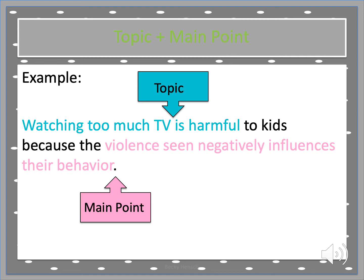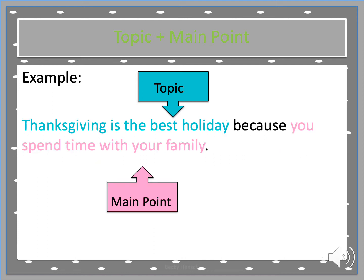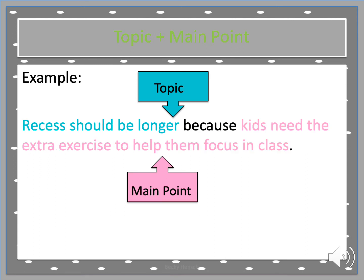Here's an example: 'Watching too much TV is harmful to kids because the violent scenes negatively influence their behavior.' The topic is that watching too much TV is harmful, and the main point is because violence is harmful. Another example: 'Thanksgiving is the best holiday because you spend time with your family.' Thanksgiving is the best holiday — that's the topic. Because you spend time with your family — that's the main point. Here's another one: 'Recess should be longer because kids need the extra exercise to help them focus in class.' Recess should be longer — that's the topic. Kids need the extra exercise to help them focus in class — that's the main point.